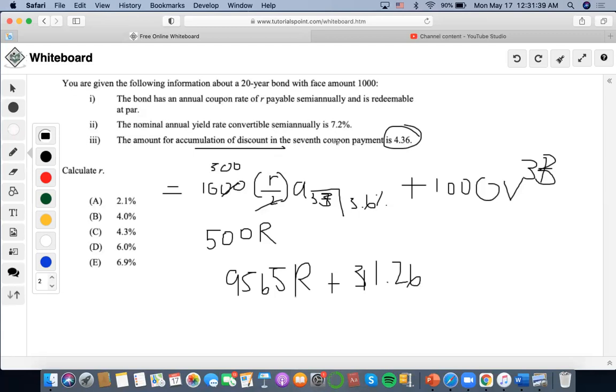Now we want to find it for the sixth coupon payment, the one prior, right? So we're going to do 40 minus 6, so it occurs at time 34, right? So we're going to replace this with 34 payments, right? And we solve. So I'm going to do 1 as the payment, 34 as the number of periods, 3.6 as the interest rate, 0 as the future value, compute present value, it's going to be 19.43.